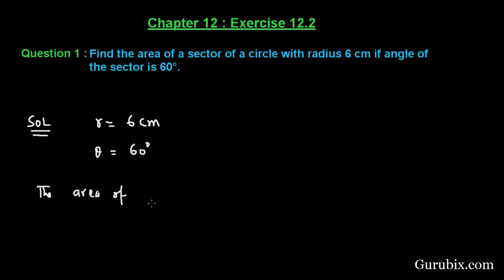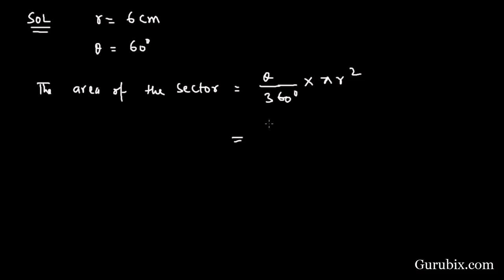Therefore, area of the sector will be theta over 360 degree times pi r square. Theta is given 60 degree over 360 degree times 22 over 7 and the radius is given 6 centimeter. This is equals to 6 times 6 centimeter square.